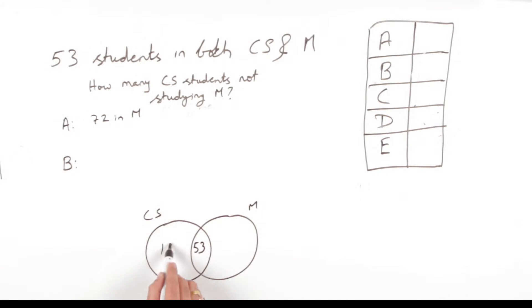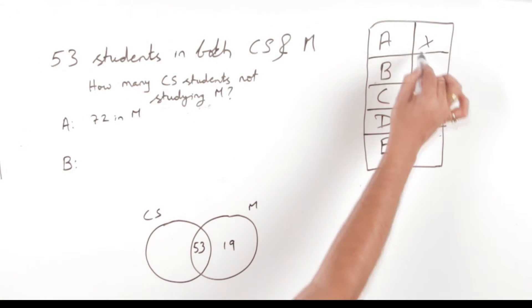We get a breakdown of who are studying both mathematics and computer science and how many are studying mathematics alone. But we are not getting the answer to the question, which says how many computer science students are not studying mathematics. So A is ruled out, and the moment A is ruled out, D is also ruled out. Now let's look at statement B.